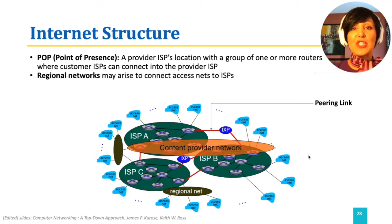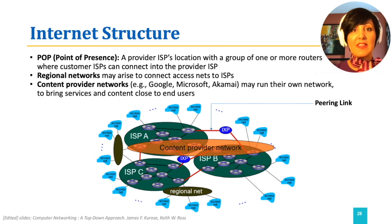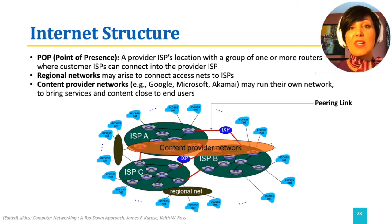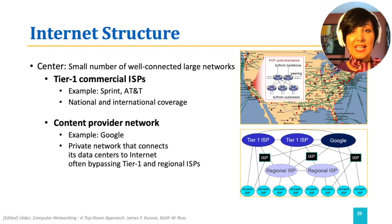Also, regional ISPs may rise in connecting access ISPs to the Tier 1 ISPs. Content provider networks like Google, Akamai, and Microsoft need their content to be as close as possible to the users. They may run their own networks and bring service close to their users. In reality, we have a small number of well-connected large networks provided by Tier 1 ISPs like AT&T and Sprint, and content provider networks like Google, that connect among regional ISPs and provide national and international coverage.